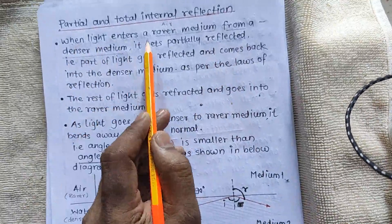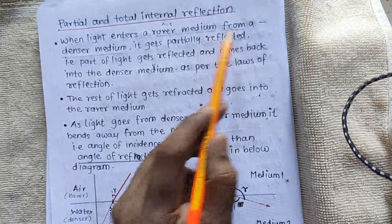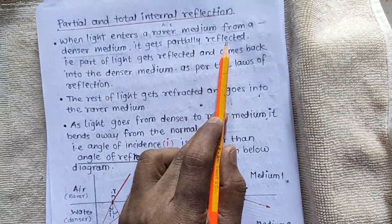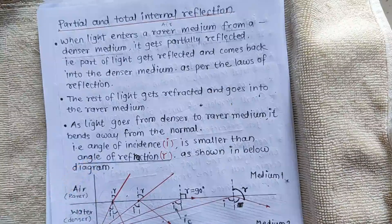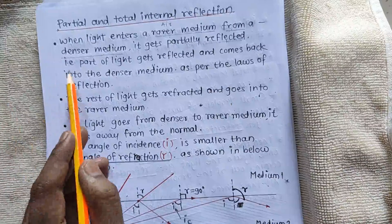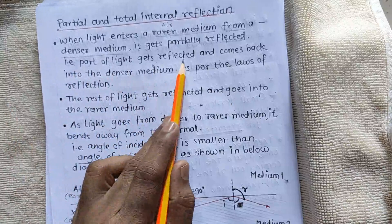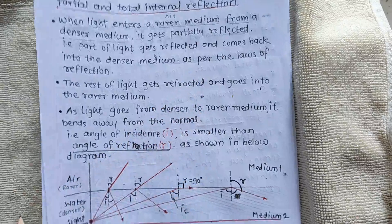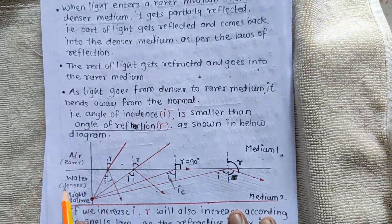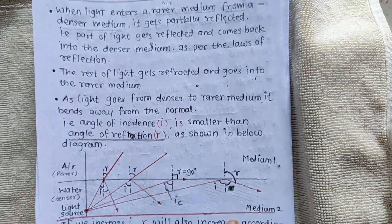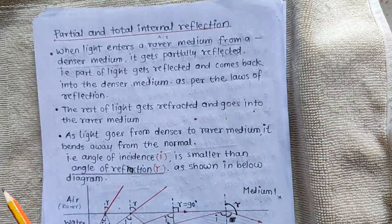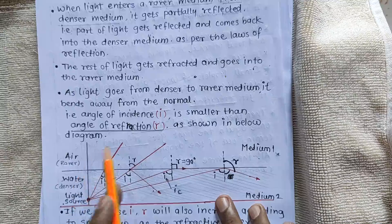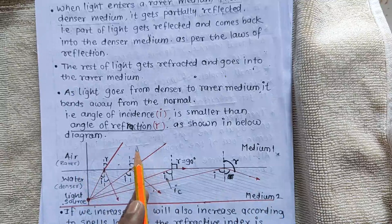When light enters a rarer medium from a denser medium, it gets partially reflected. Partially means it is a little reflected and a little refracted. For example, if 100 rays are going from water to air — denser medium to rarer medium — you can consider 50 rays are going out of the water, which is refraction.